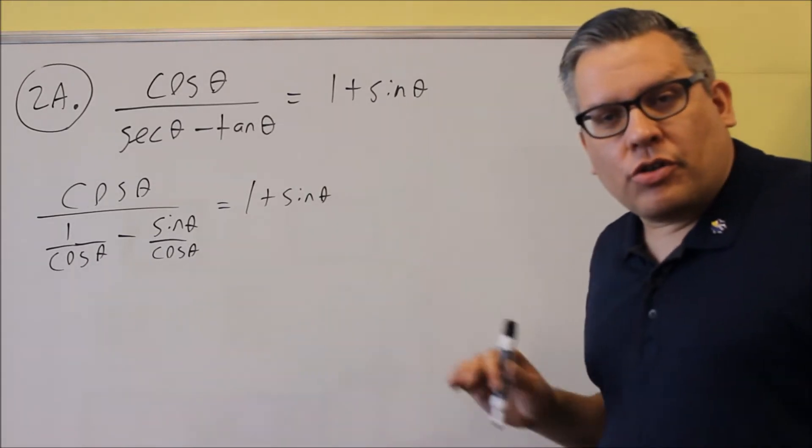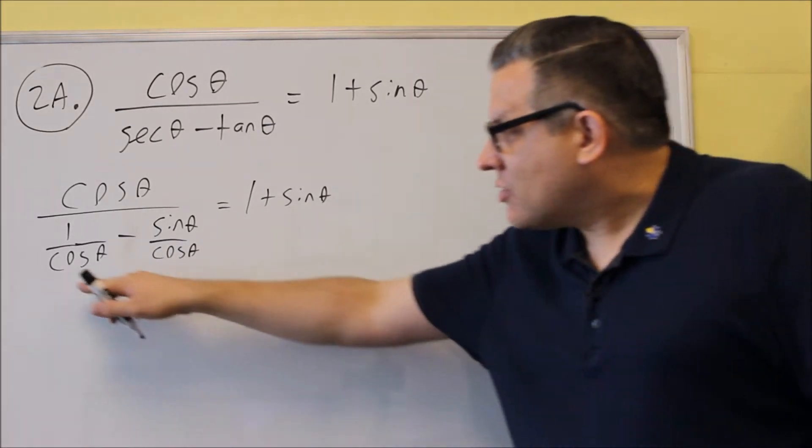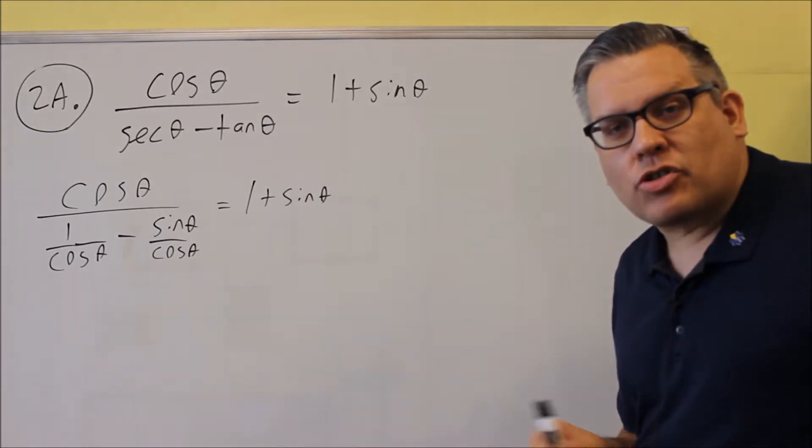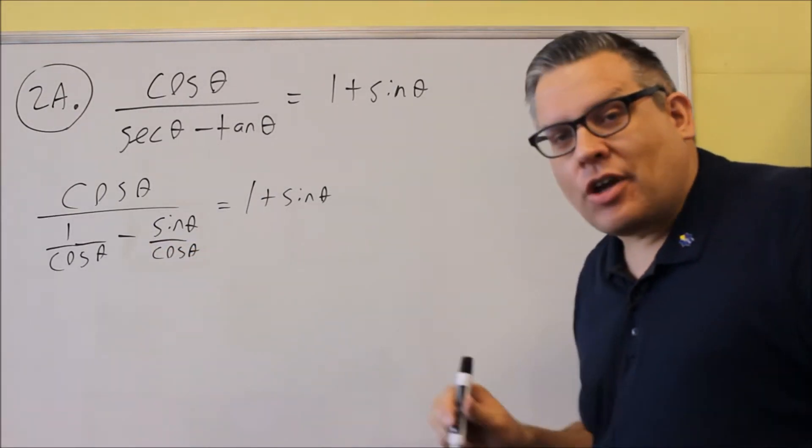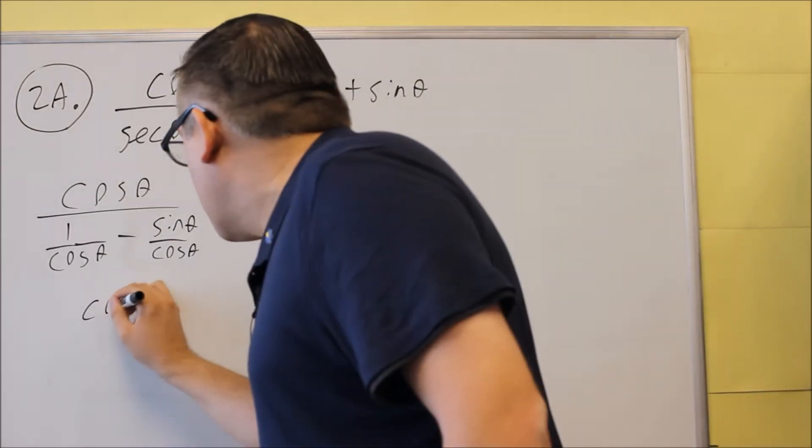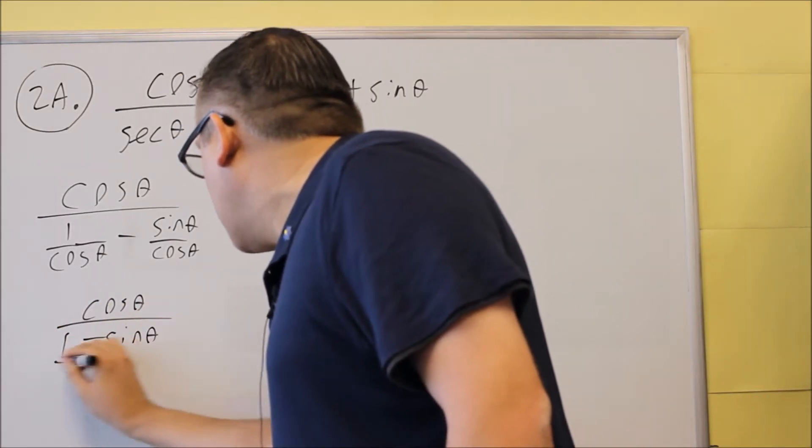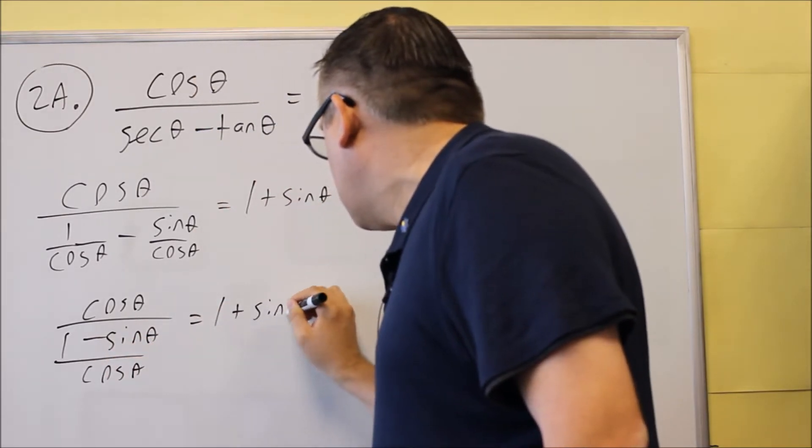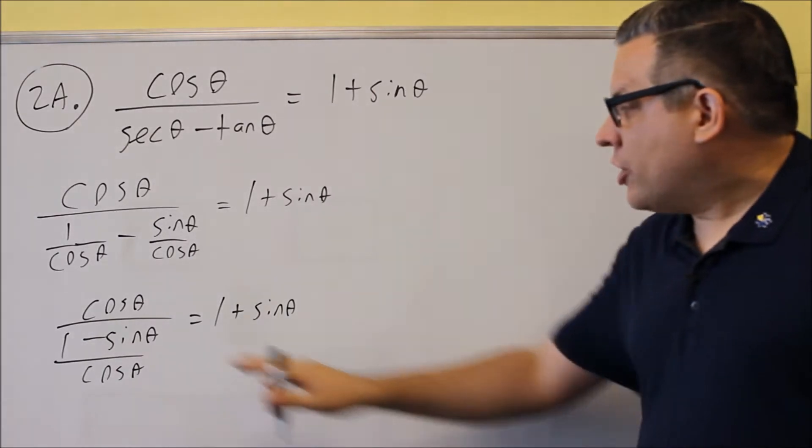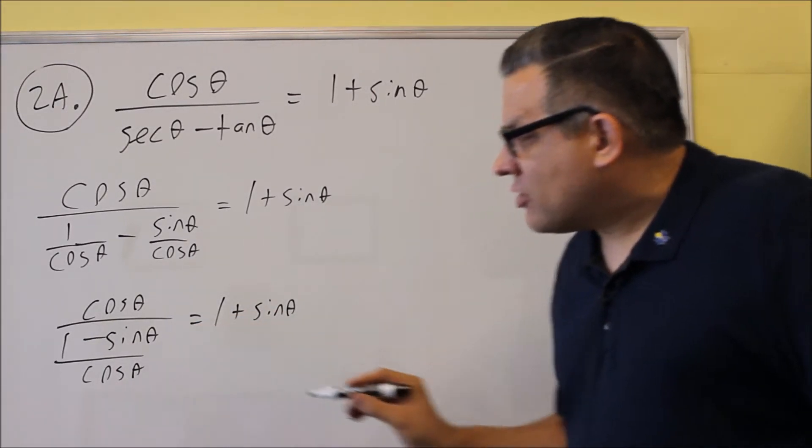Next thing we want to do is common denominators, if you see two fractions. Now these happen to already have common denominators, so we don't have to do any more work with that. All we have to do is combine that together as a single fraction. So we're going to do a cosine on top, on the bottom, one minus sine theta over cosine theta. And then we get that as our next step. So we combine it together as a single fraction.